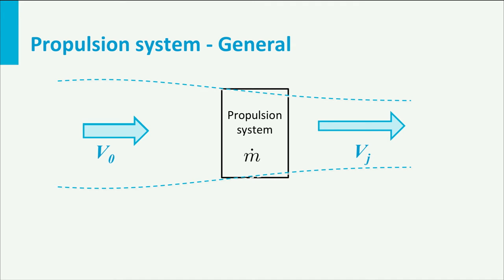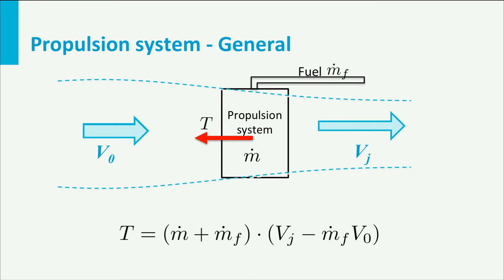In most propulsion systems used for aviation, fuel is burned and thus the mass flow at the exit is the summation of the mass flow of air and the fuel mass flow. Based on the momentum equation, we can state that the thrust equals the change in momentum rate, which is the mass flow of air plus the mass flow of fuel multiplied with the jet velocity minus the mass flow of air multiplied with the flight speed.